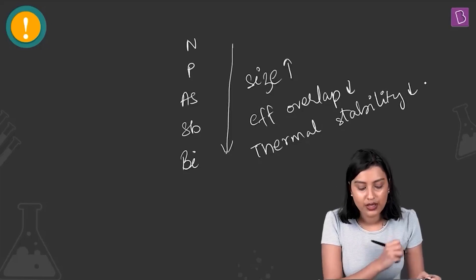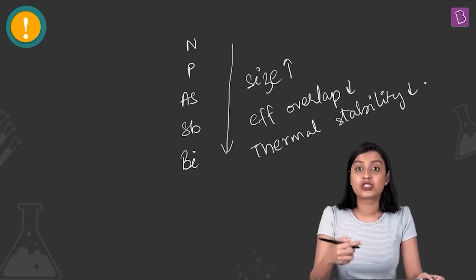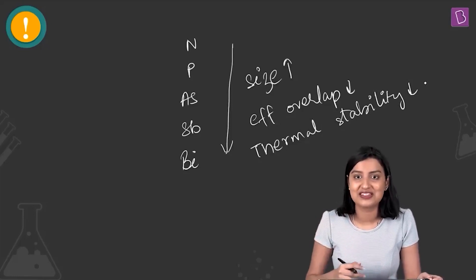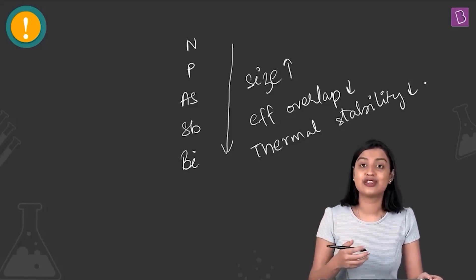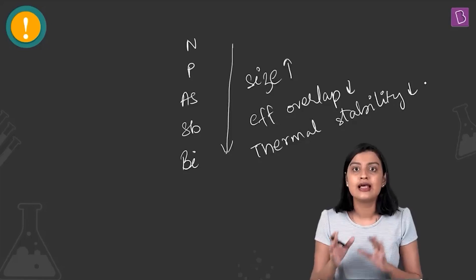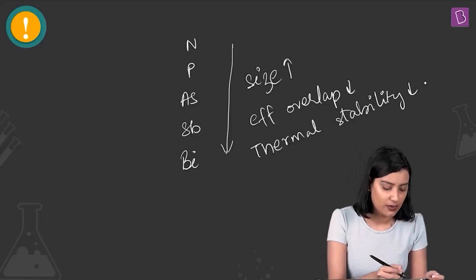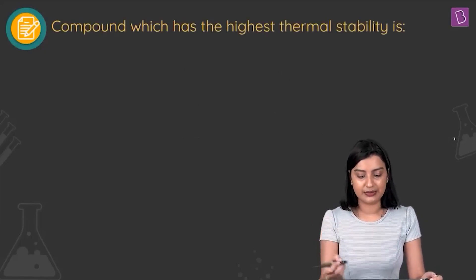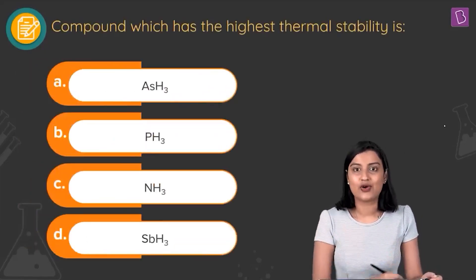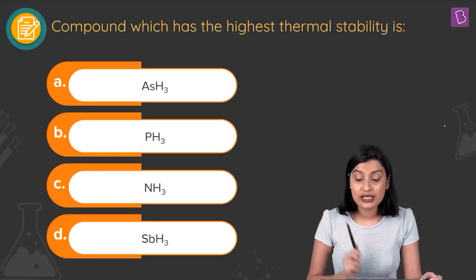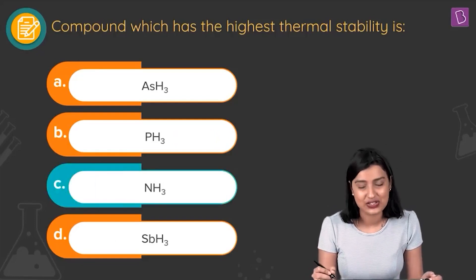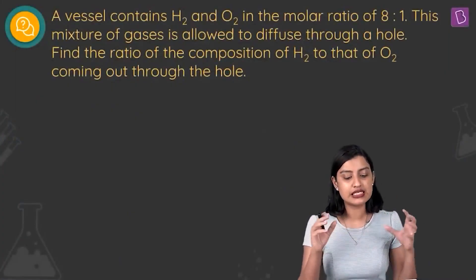So the most stable hydride will be the one with the smallest central atom. Nitrogen has the smallest size in group 15, so NH3 — ammonia — is going to have the highest thermal stability. Option C, NH3, is the right answer to this question.